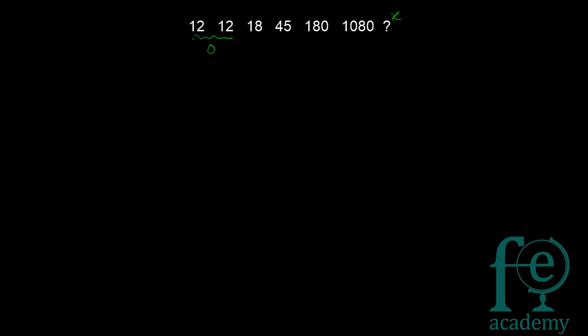The difference between the first two terms is 0, then the difference equals 6, then the difference becomes 36, then a big number again. You can see the difference between 180 and 1080 is very huge. So you cannot connect the numbers in this series by addition — that is the first thing you have to determine.